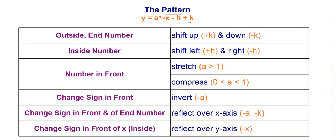The pattern you've learned with all the other functions still holds with radical functions. The number on the outside tells you how much you're going to move up or down — if k is positive, you move up; if it's negative, you move down. The number on the inside of the radical next to x tells you the shift left or right. It's the opposite of what you think: a plus h moves you to the left, and a minus h moves you to the right.